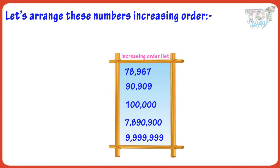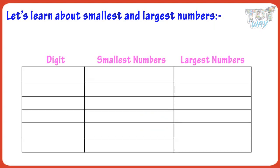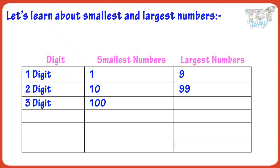Now let's learn about the smallest and greatest numbers of particular digits. Here is an interesting pattern: 1 is the smallest one-digit number, and 9 is the largest. 10 is the smallest two-digit number, and 99 is the largest. 100 is the smallest three-digit number, and 999 is the largest. 1,000 is the smallest four-digit number, and 9,999 is the largest four-digit number, and so on.